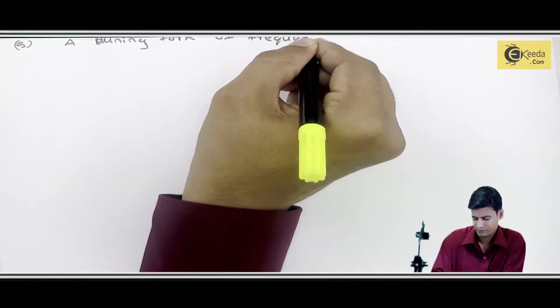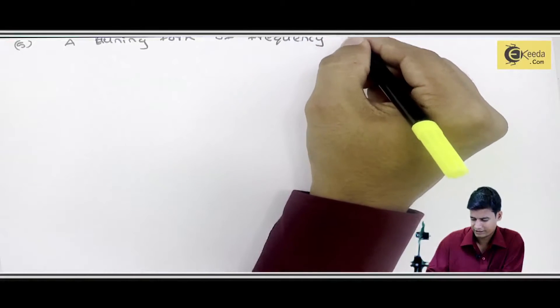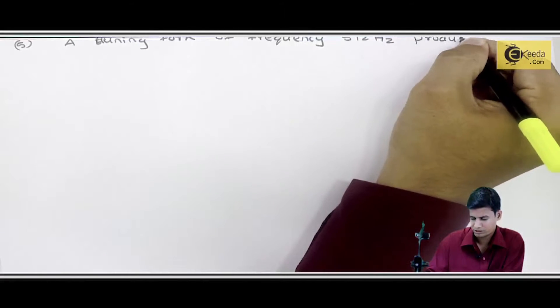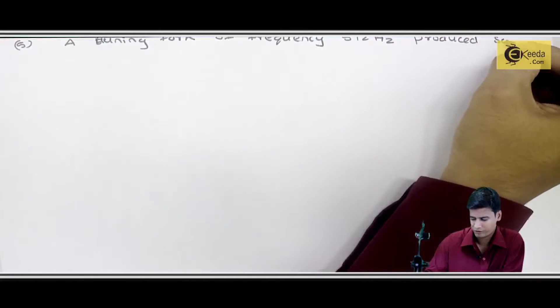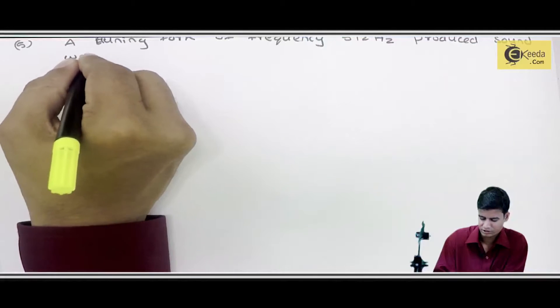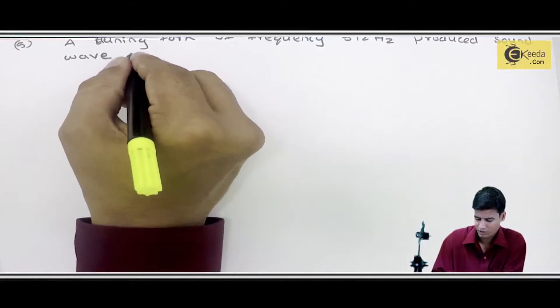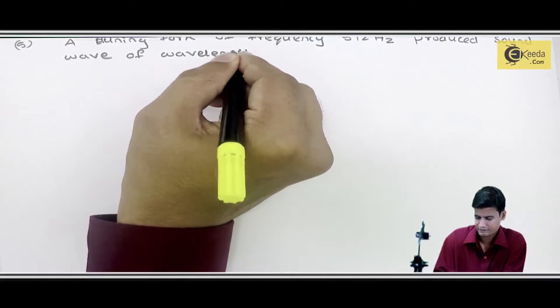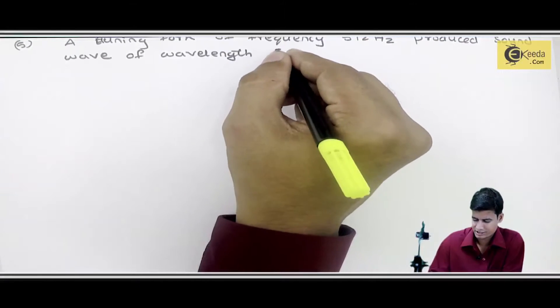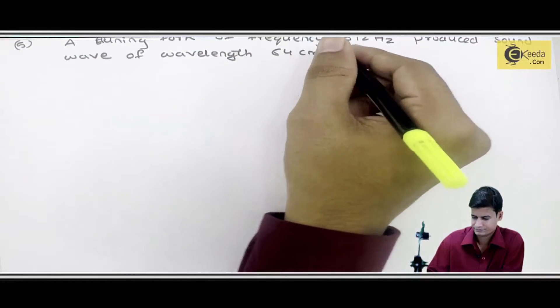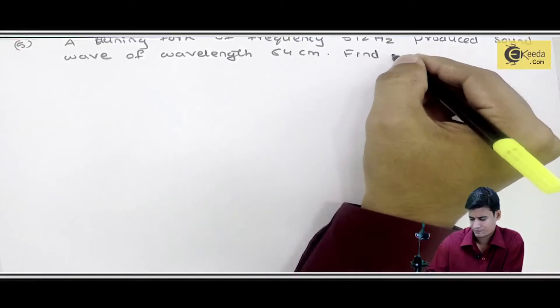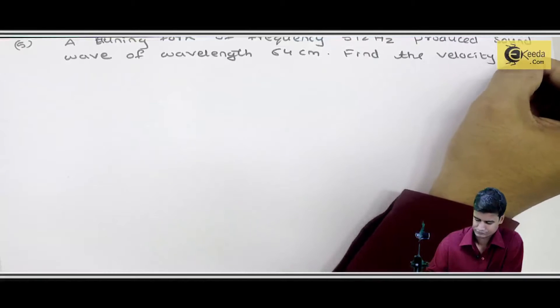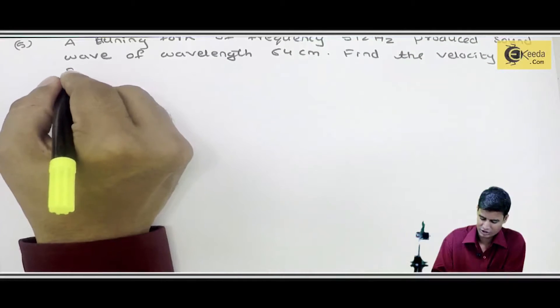of frequency 512 hertz produced sound wave of wavelength 64 cm. Find the velocity of sound.